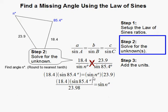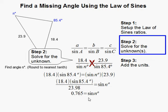To isolate the unknown, I divided both sides by 23.9, and I get 0.765.